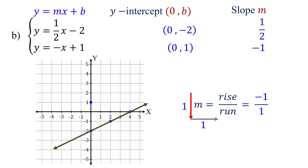Starting from the y-intercept, go down 1 unit, then move to the right 1 unit. Plot one more point by moving from this point 1 unit down and 1 unit right. Now, connect these points with a straight line. This is the line of the second equation. The intersection point of the two lines is (2, -1), which is the solution to the system of equations.